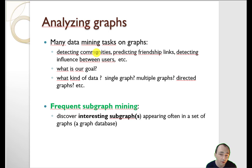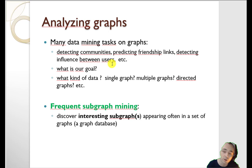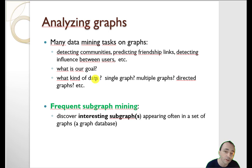If we want to analyze a graph, there are many data mining or machine learning tasks we can do. For example, we can detect communities, try to predict who will be friends with whom, or detect the influence of people on other people in a social network. We need to think about what our goal is, what kind of data it is — directed or undirected graph, a single graph or multiple small graphs, and so on.